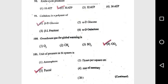Question 99: Cellulose is a polymer of beta-D-glucose. Question 100: Greenhouse gas responsible for global warming is CO2. Question 101: Unit of pressure in the SI system is Pascal. Question 102: Coconut fat is a rich source of lauric acid.